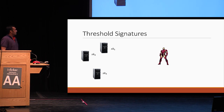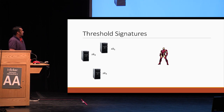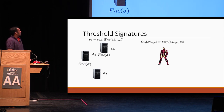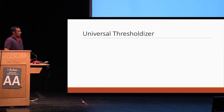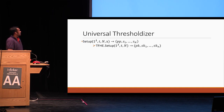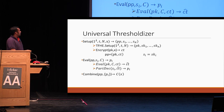Given threshold FHE, how can we address threshold signatures? Suppose Tony wants to sign. He sets up threshold FHE, gives secret keys to the servers, and gives an encryption of his signing key to all these servers. The servers, using the encryption of the signing key, can compute an encryption of the signature on the message he wants to sign. Once you have these encryptions, the servers can provide partial decryptions, and Tony can combine them to get a signature. This exactly is the idea — in fact, we build the notion of universal thresholdizer by capturing this idea. There are more details around robustness which I'm not going to cover in this talk.